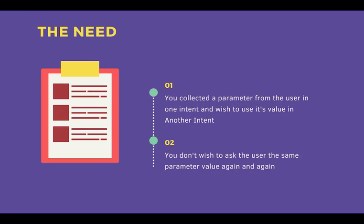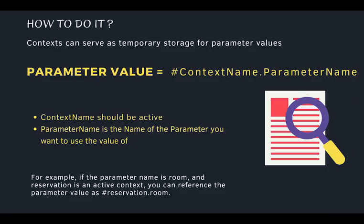We've already covered fulfillment, so we could collect those separately and send them separately to fulfillment. But now what we can do is collect them separately and send them all at one time to fulfillment. Context will serve as temporary storage for parameter values. The slight change you need to make in your parameter value is: parameter value equals hashtag context_name dot parameter_name, where you used to enter dollar parameter value.